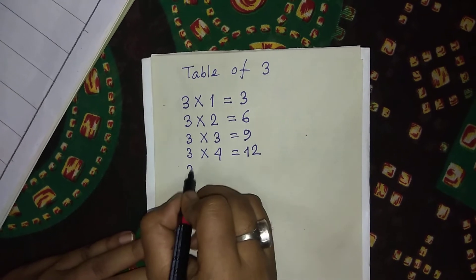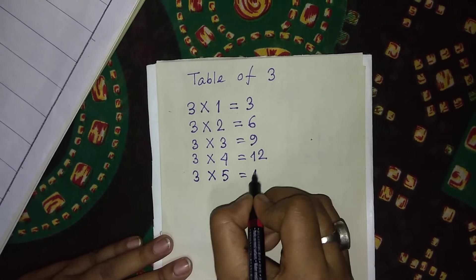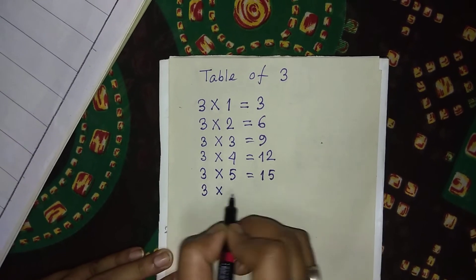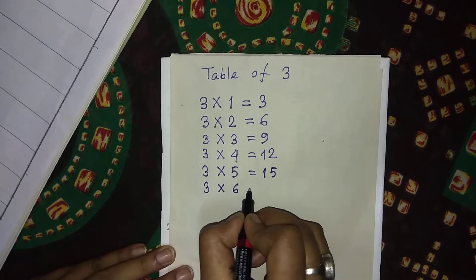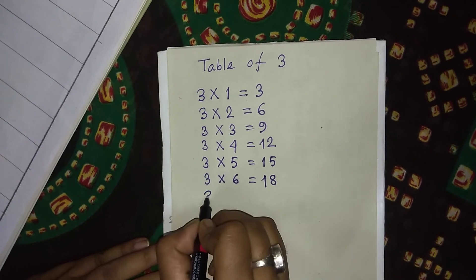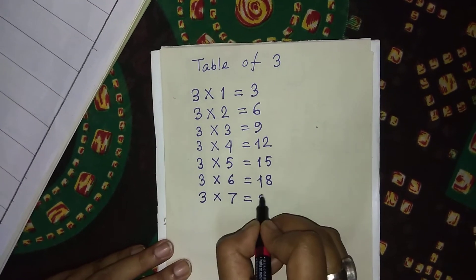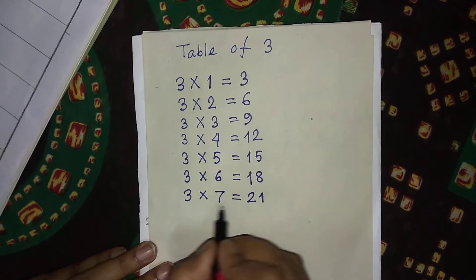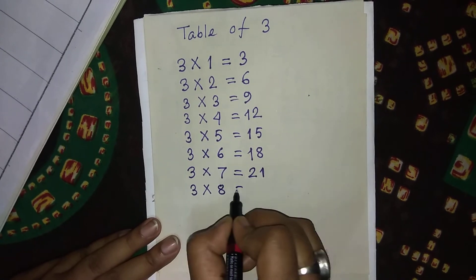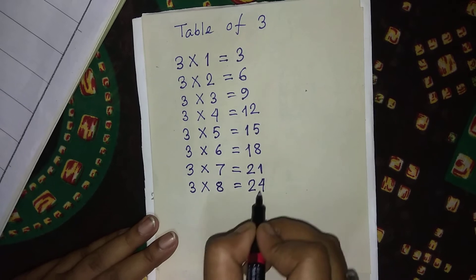Three multiply by four is equal to twelve — three fours are twelve. Three multiply by five is equal to fifteen — three fives are fifteen. Three multiply by six is equal to eighteen — three sixes are eighteen. Three multiply by seven is equal to twenty-one — three sevens are twenty-one. Three multiply by eight is equal to twenty-four — three eights are twenty-four.